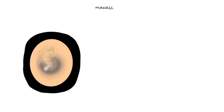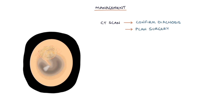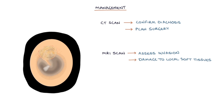A CT scan of the head can be used to confirm the diagnosis and plan for surgery. An MRI scan may be helpful to assess the invasion of the cholesteatoma and any damage to local soft tissues. Treatment involves surgical removal of the cholesteatoma.